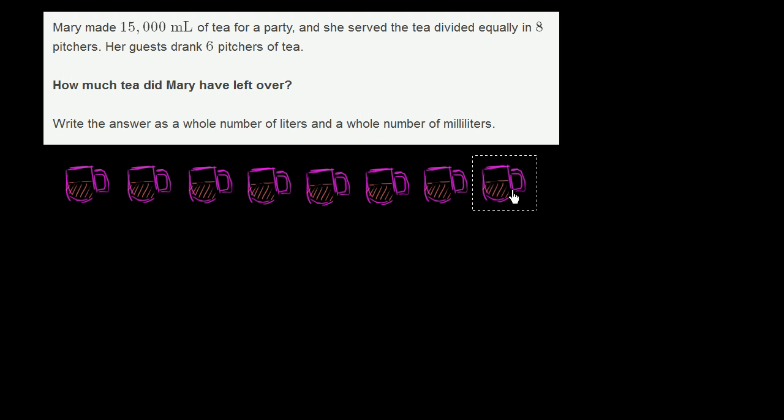So she wants to put the exact same amount of fluid in each of these eight. So she's going to divide evenly the 15,000 milliliters into eight pitchers. So that's straight up division. She's going to start with 15,000 milliliters, 15,000, and she's going to divide it by eight. She's going to divide it into eight equal groupings, or eight equal pitchers, the same amount in each of the pitchers.